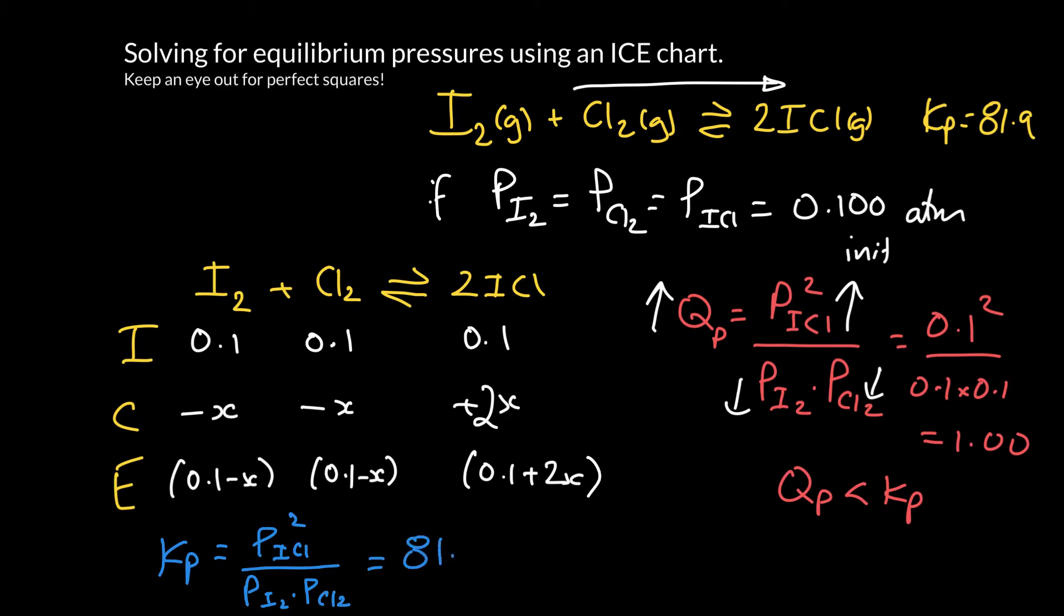We're told in the problem this is 81.9, and we've calculated the equilibrium pressures, at least involving X's. So that would be 0.1 plus 2X, and at the bottom it would be 0.1 minus X, and 0.1 minus X. Do you see my mistake? Yeah, there's two ICl's. I got to remember to square that.